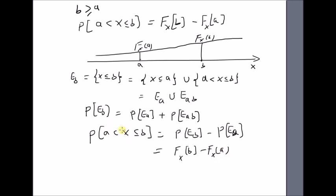So the probability of a given interval can be easily calculated as the difference between the CDF of the upper limit minus the CDF of the lower limit. Thanks for watching.